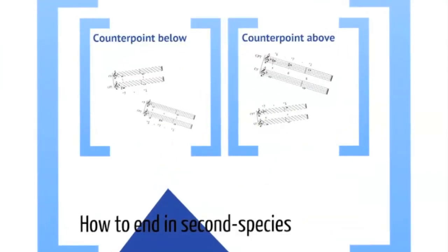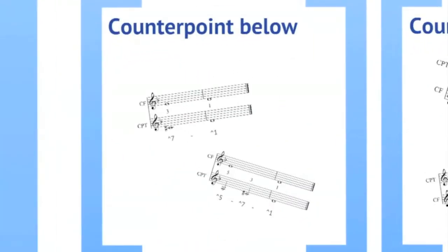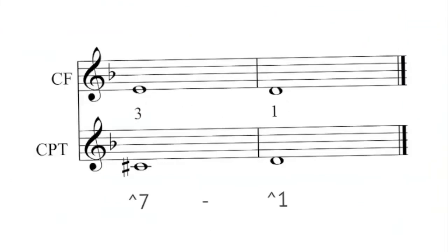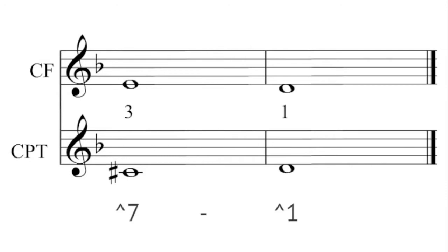Now let's discuss how to end a second species example. The counterpoint is below you have two options. The first is just like a first species.